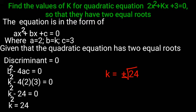Then k is equal to plus or minus √(4×6), that is equal to k = ±2√6.